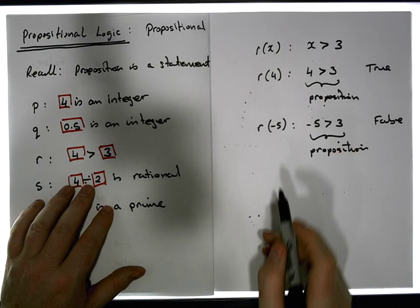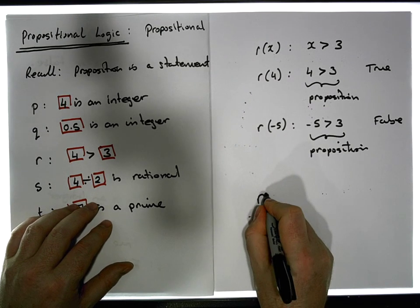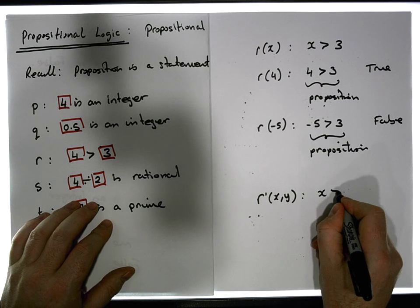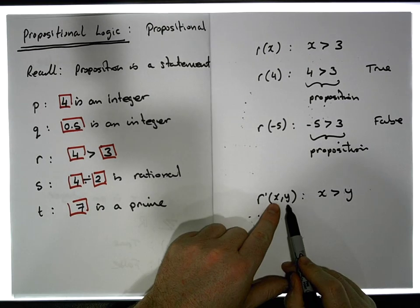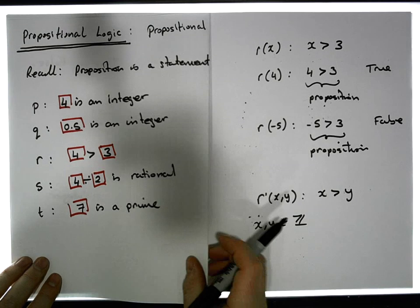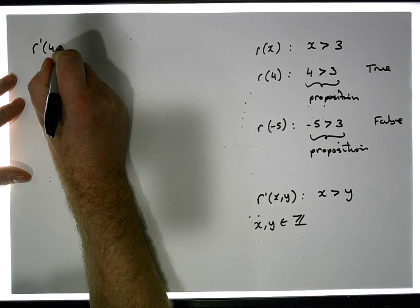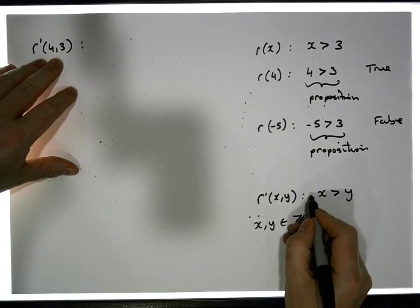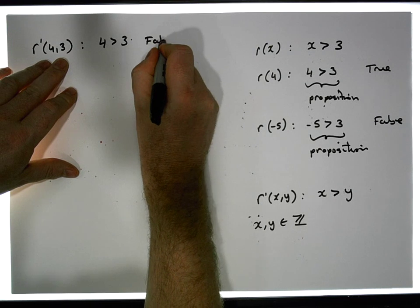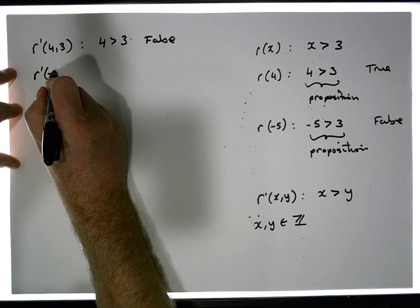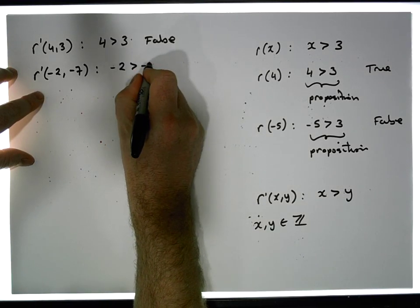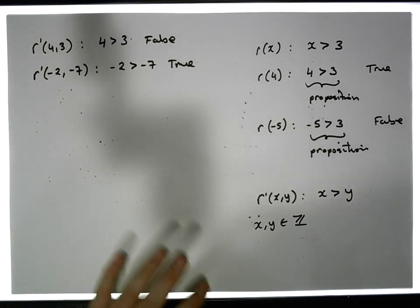We could also have a different function — let's say r'(x, y). This predicate function takes two inputs, and what's being asked is: is x greater than y? The domain of discourse is the integers. So r'(4, 3) becomes the proposition '4 is bigger than 3', which is in fact true. And r'(-2, -7) becomes '-2 is bigger than -7', which is in fact true.